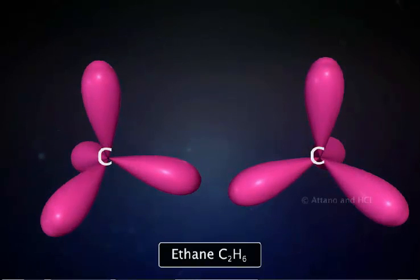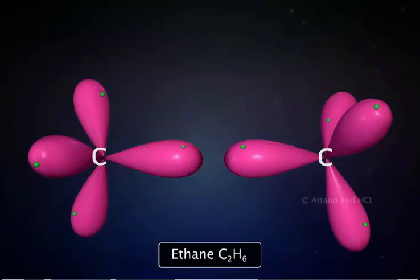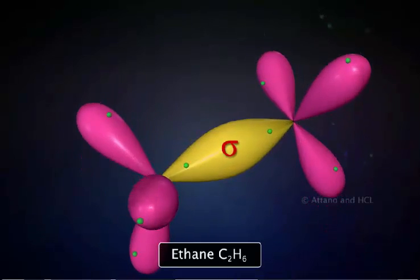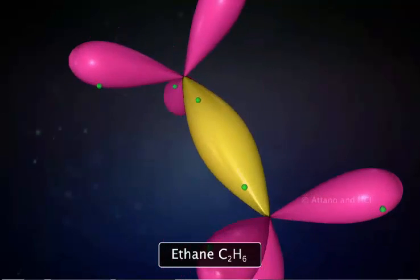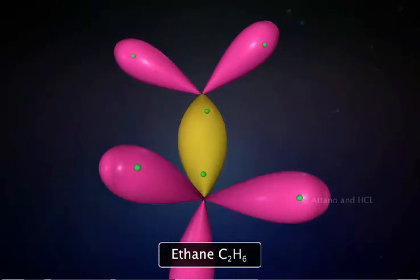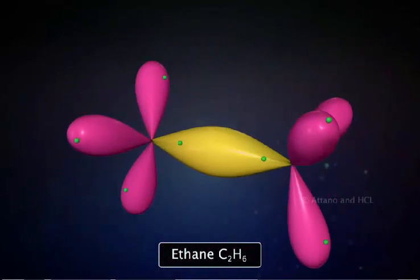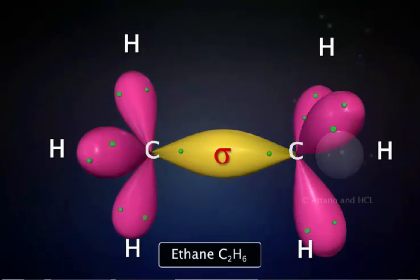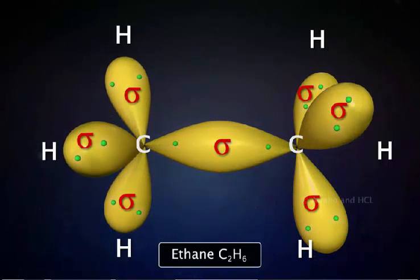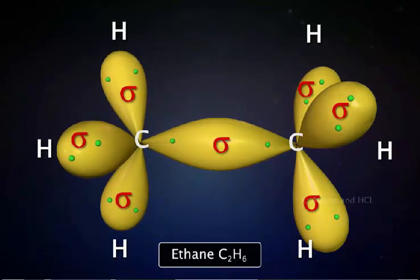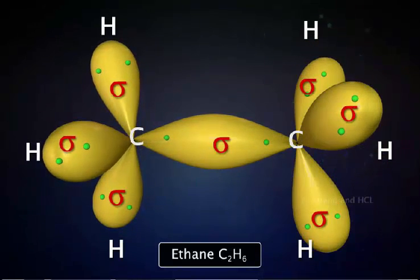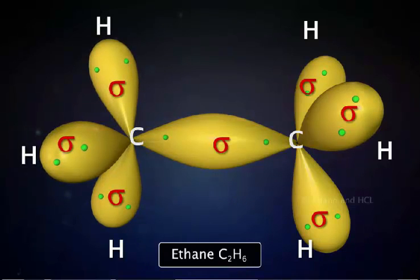Each hybrid orbital contains one valence electron. The bond formed between two carbon atoms is called a sigma bond — a covalent bond formed by an end-to-end overlap of sp3 orbitals. The electron density is concentrated between the nuclei of the bonding atoms. The remaining three sp3 orbitals on each carbon atom overlap with 1s orbitals of hydrogen to form six sigma bonds. Two electrons are shared in each sigma bond. Recall that a single bond is composed of one sigma bond. Rotation can occur about a sigma bond, as the sigma bond does not break upon rotation.